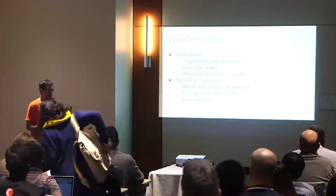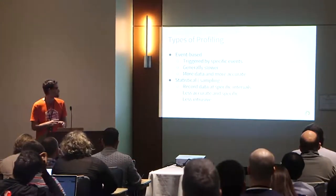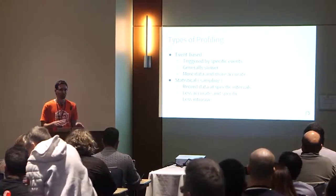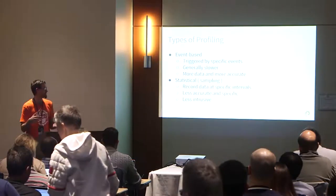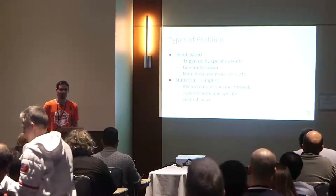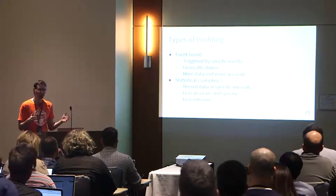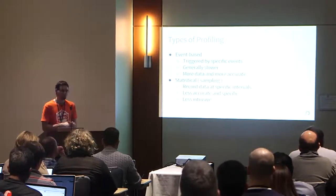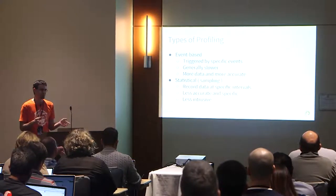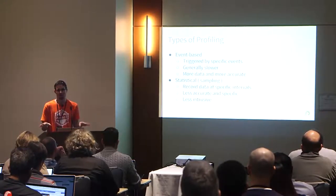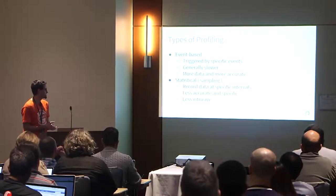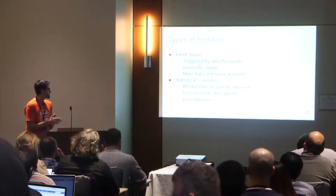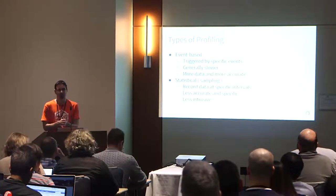There are two types of profiling I'm going to talk about. The first is event-based profiling, where you're gathering data triggered by specific events — like every time a function is called. That type is generally slower because you're performing that action a lot more times, gathering more data. The trade-off is more accuracy. Event-based profilers generally can't be used in production for that reason. The second is sampling or statistical profilers, where you record data at specific intervals — like every tenth of a second — trapping data like the call stack. Those are less accurate but less intrusive, so you can use them in production with limited overhead.